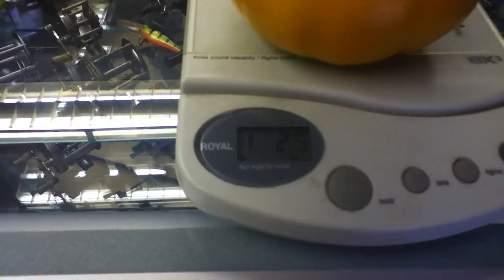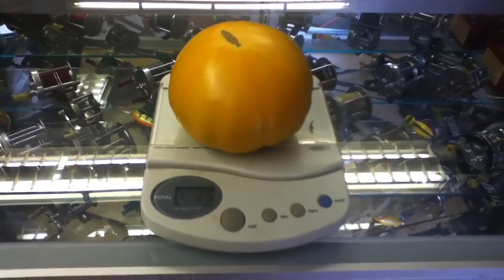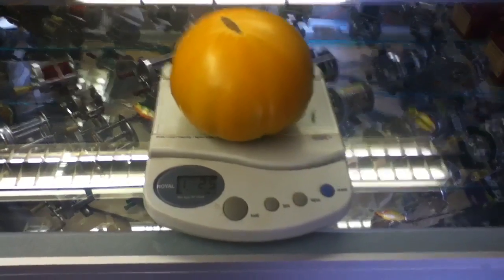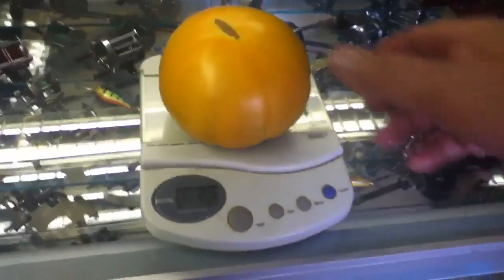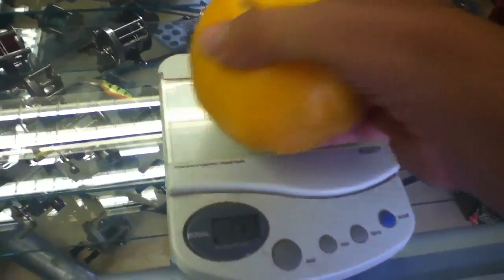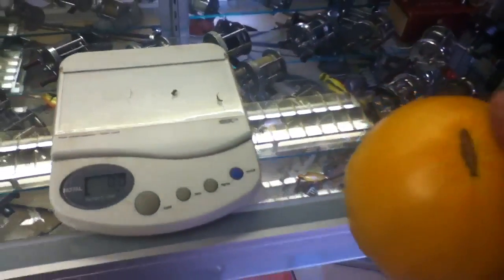One pound, 2.5 ounces. Nice yellow brandywine. It's not quite the average size, just a hair smaller, but most of them are just about like that one.